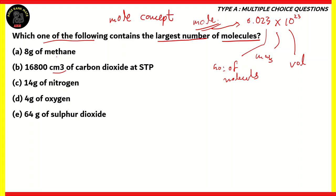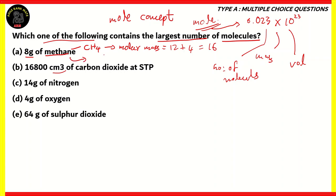Option A: 8 grams of methane. Methane has the chemical formula CH₄. To find the number of moles, we need its molar mass. Carbon has a mass of 12 and hydrogen has a mass of 1, and since we have 4 atoms of H, we add 4. So the molar mass is 16. Therefore, 8 grams of methane gives us 8 ÷ 16 = 0.5 moles.